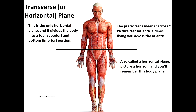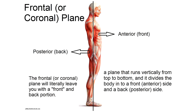Alternatively, you can think of the horizon, which is the horizontal boundary between the earth and the sky. And finally, we have the frontal plane, also called a coronal plane. This is a plane that runs vertically from top to bottom, and it divides the body into a front (anterior) side and a back (posterior) side. The frontal plane will literally leave you with a front and back section.